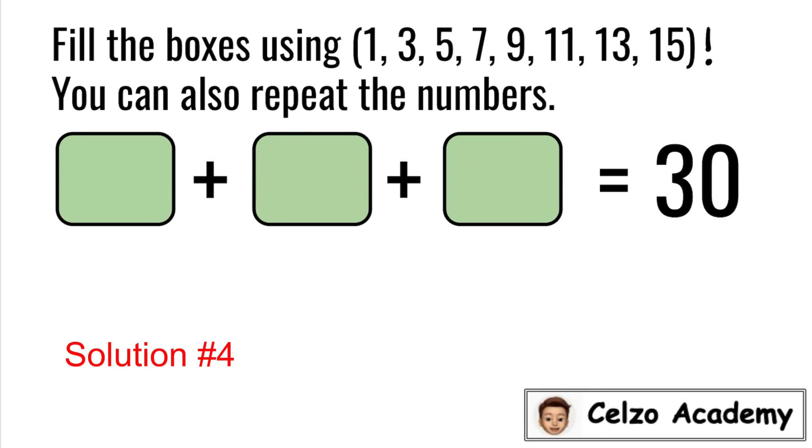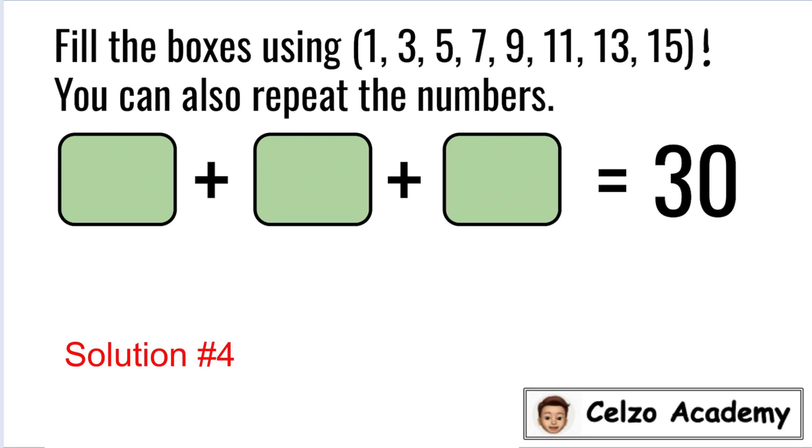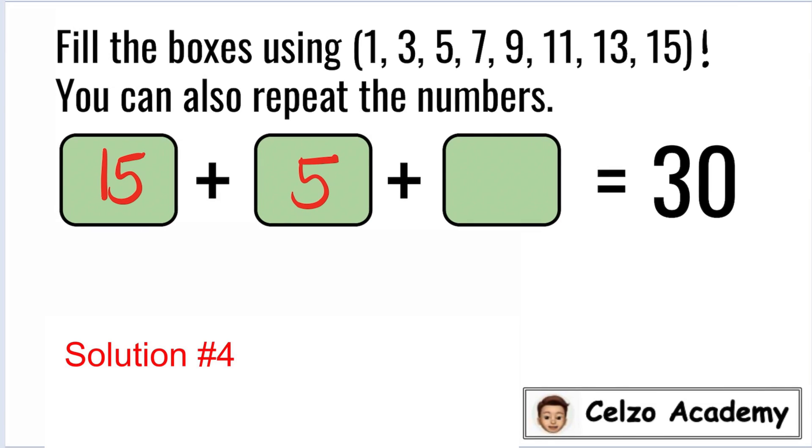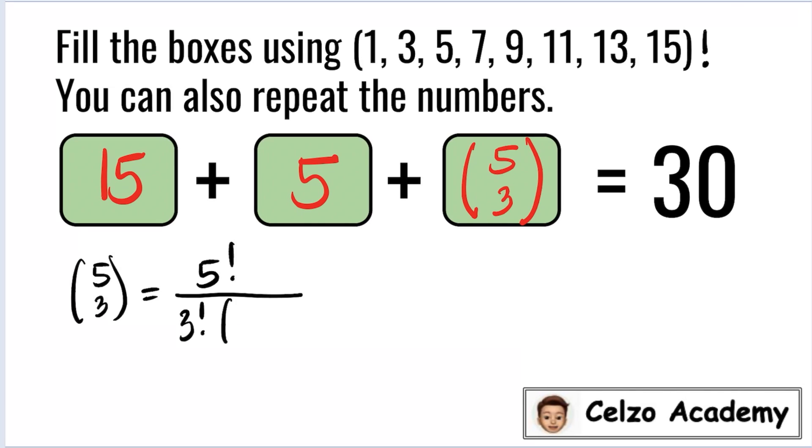Here's our solution number 4. For the first box, I will write the number 15. For the second box, I will write the number 5. 15 plus 5 is 20. So this means that the third box should be a 10 to get a 30. And here's our third box number. This symbol means 5 choose 3. To evaluate 5 choose 3, we will use 5 factorial over 3 factorial times the difference of 5 minus 3 and then factorial.